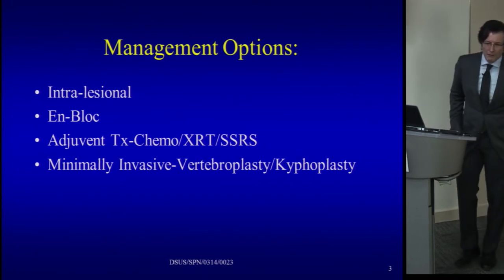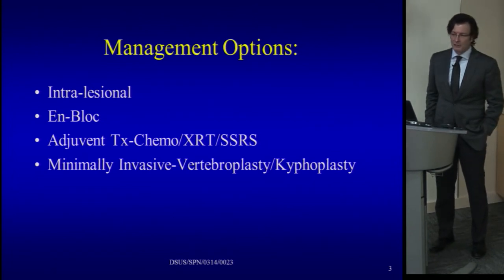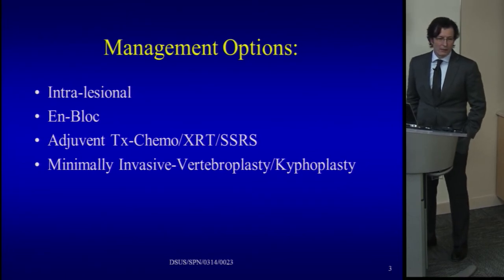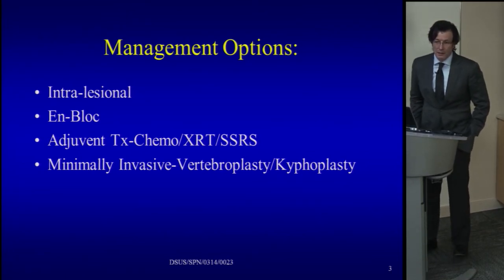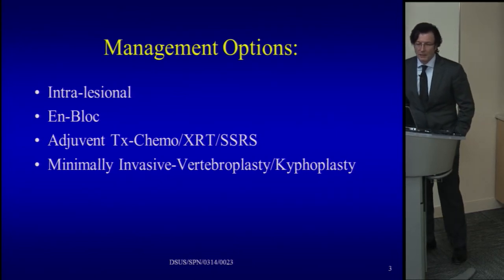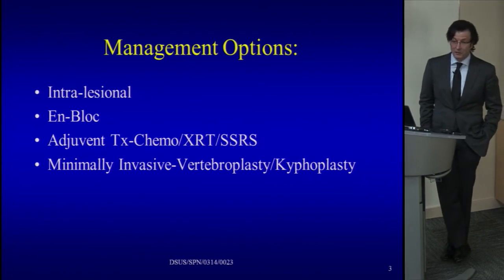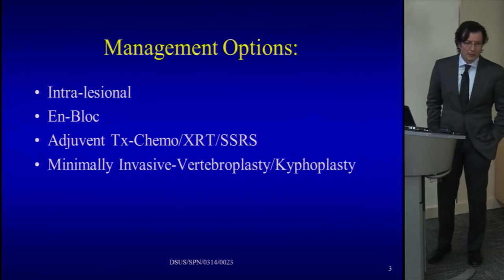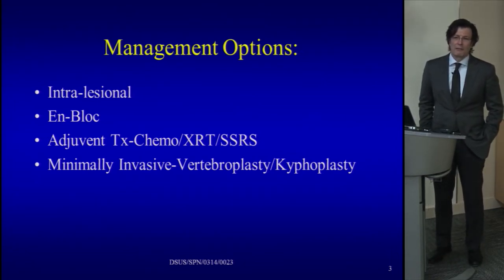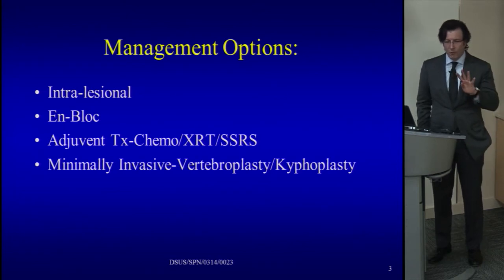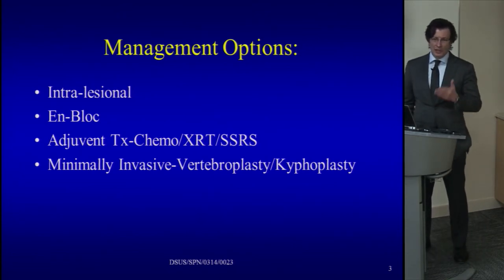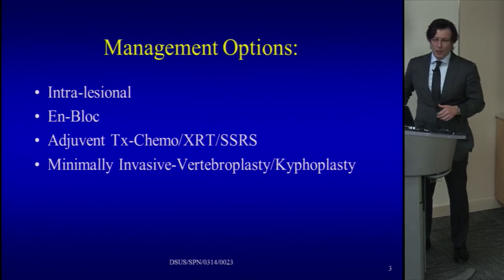For patients with metastatic disease, there are four options available today. First, intralesional resection — we go in and remove the vertebra intralesionally, getting into the tumor itself. Second, en bloc resection — some advocate doing an en bloc resection even on patients with metastatic disease. Third, adjuvant therapy: radiation, chemotherapy, or radiosurgery. Fourth, minimally invasive vertebroplasty or kyphoplasty. These are the four tools we as spine oncologists have.